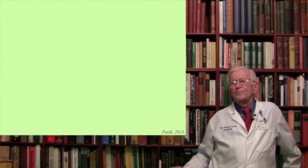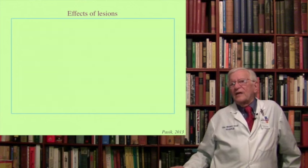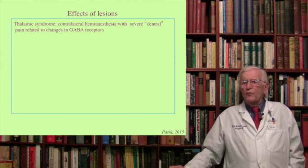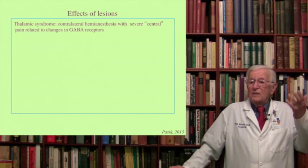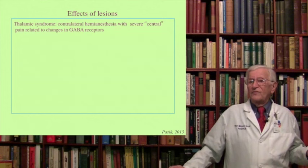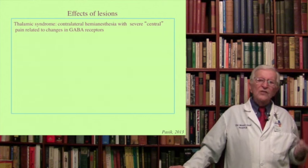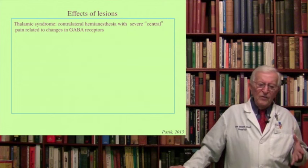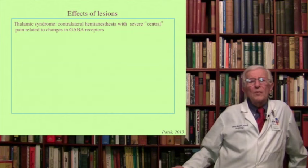What about the effect of lesions in the thalamus? There is a very characteristic syndrome called the thalamic syndrome, occurring in hemorrhagic infarcts that destroy the thalamus in great part. It gives rise to a contralateral hemianesthesia — because for instance VPL and VPM are destroyed, the opposite side of the body will have some kind of anesthesia. But more importantly, it is accompanied by severe central pain that is very difficult to treat and very disturbing to the patient, probably related to changes in GABA receptors within the thalamus. It's a tough syndrome.